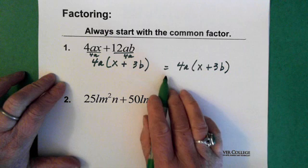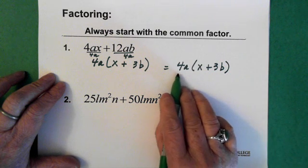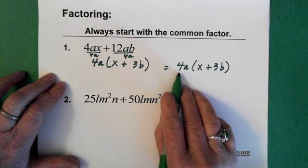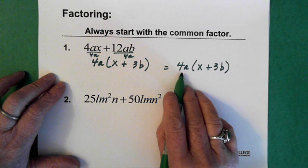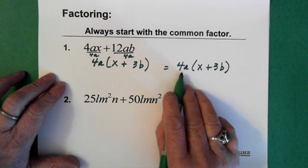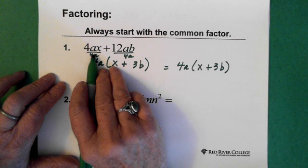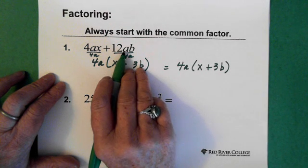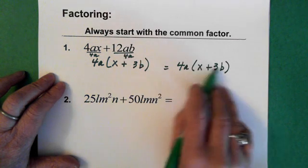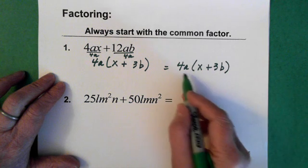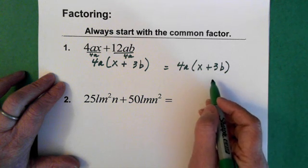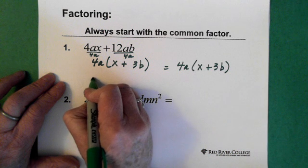Now you can see here, these are the two prime terms, prime pieces, that are multiplied together to give us 4AX plus 12AB. And if you feel like maybe you've made an error, you can always just walk through these steps and multiply it again. So let's just do that.